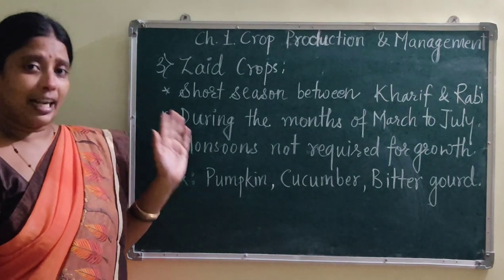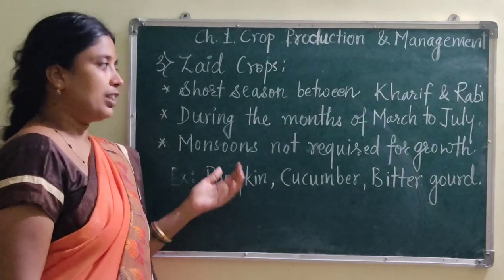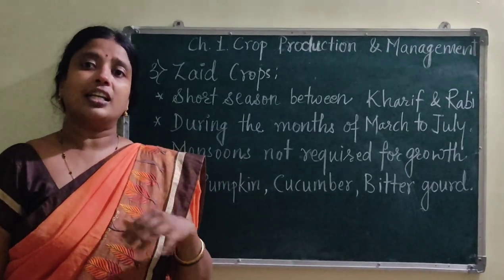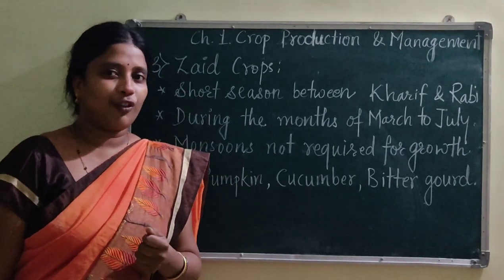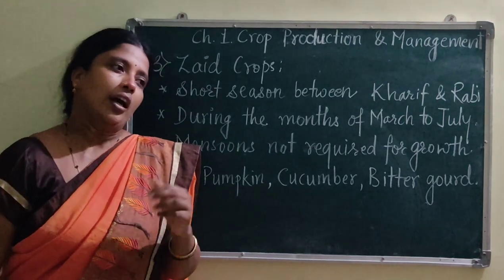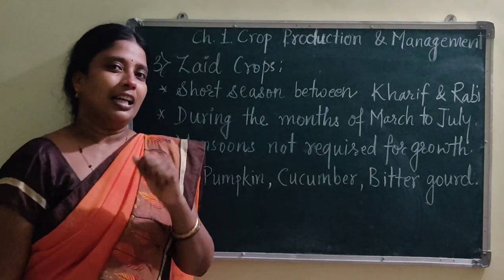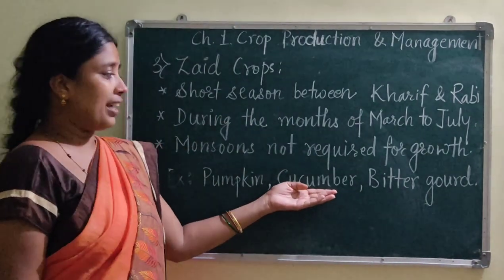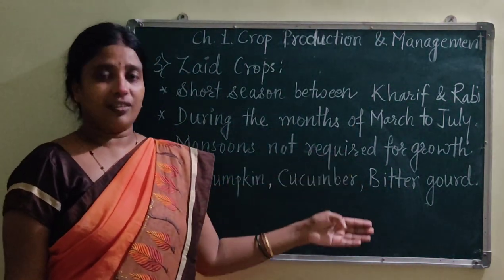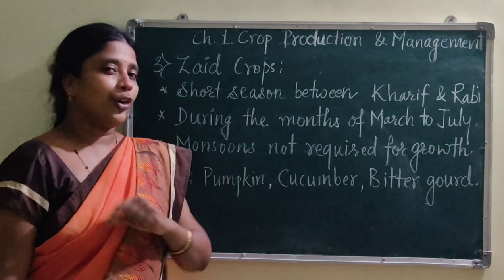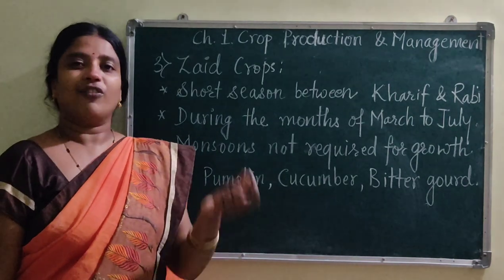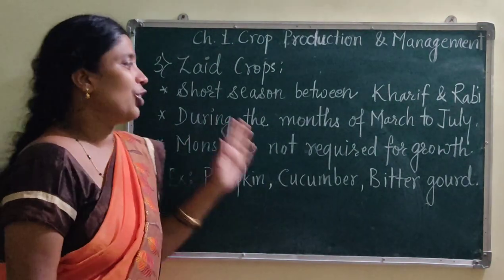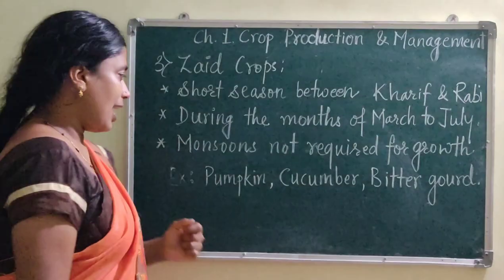With the help of irrigation methods, we supply water for these crops. Also, the crops grown during this summer time have higher water content. For example, cucumber, bitter gourd, and pumpkin — all these crops grown during summer contain more water. When we consume them, our body gets enough water, because during the summer season the water requirement of our body increases.